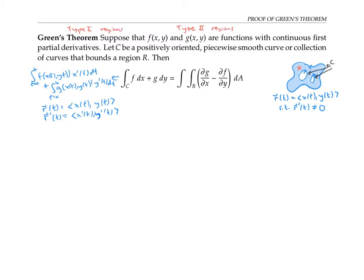Type one regions are bounded by curves at the top and at the bottom, but straight lines on the left and right sides. It's okay if one or more of those straight lines collapses to points. What's important is that the top and bottom curves can be written as y as a function of x — so y equals h₂(x) for the top and y equals h₁(x) for the bottom. Those curves have to satisfy the vertical line test.